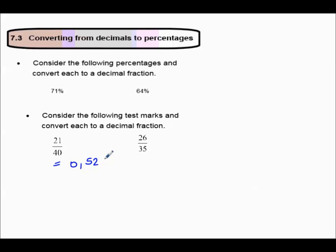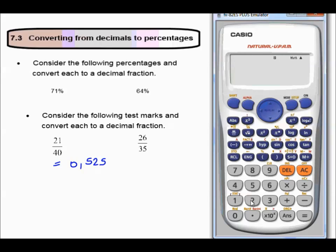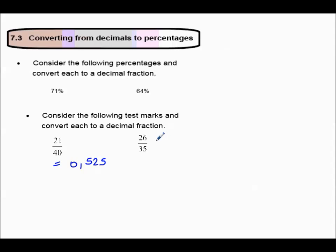26 out of 35, we could multiply by 100, which equals 74.28. Remember, we rounded it off to 74.3. How do we write that as a decimal? It's 74.3 over 100, so that is going to be 0.743.